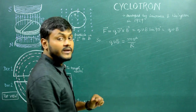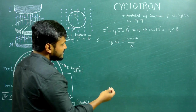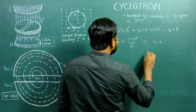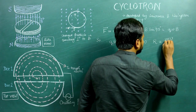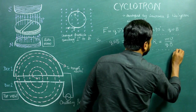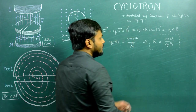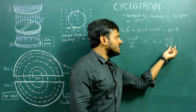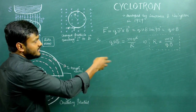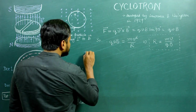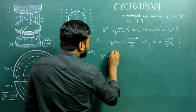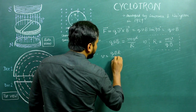From this, we can calculate different physical quantities associated with this motion. For example, the radius of the circular motion: cancelling V from both sides, we get R = MV / QB. This is the radius of the circular trajectory for a charged particle of mass M, velocity V, and charge Q in a magnetic field B. We can also rearrange to get velocity: V = QBR / M.